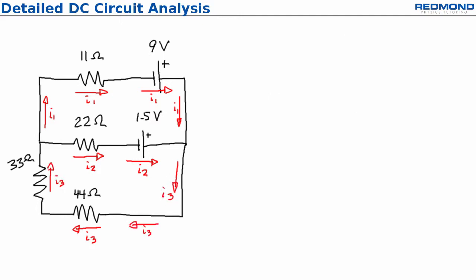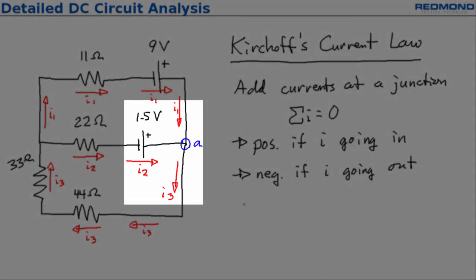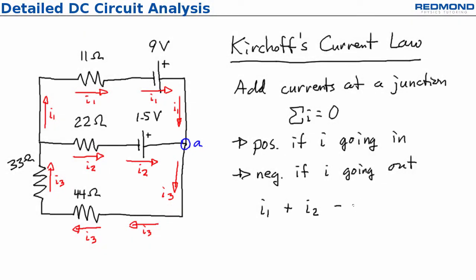Next, I apply Kirchhoff's current law, which means that I add up the currents at a junction and I can write it mathematically as the sum of the currents equals zero. The current is positive going into the junction, so the current arrow points towards the junction and the current is negative going out of the junction with the arrow pointing away from the junction. For the junction shown, I1 and I2 go into the junction and I3 goes out, so my equation is I1 plus I2 minus I3 equals zero.